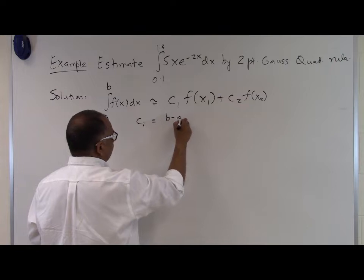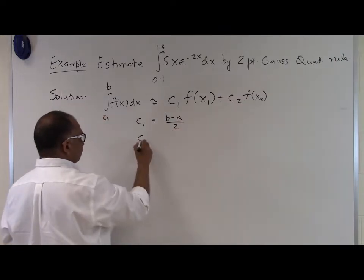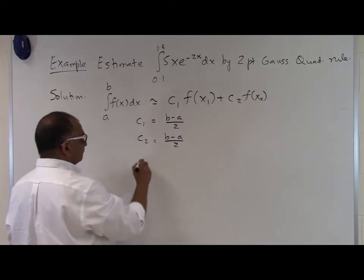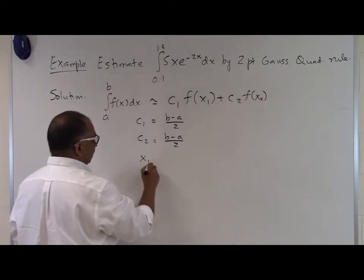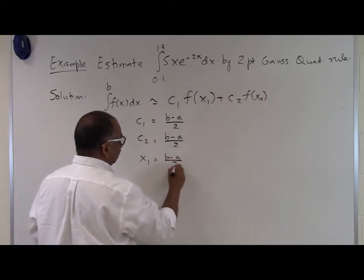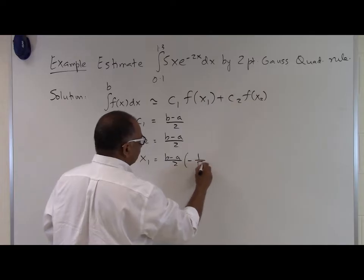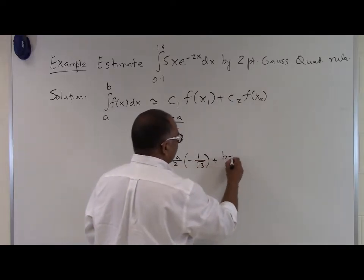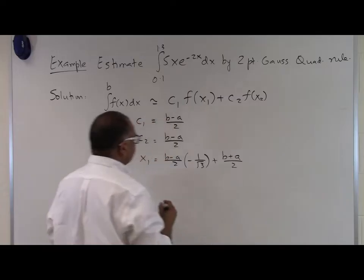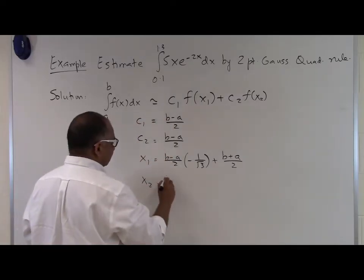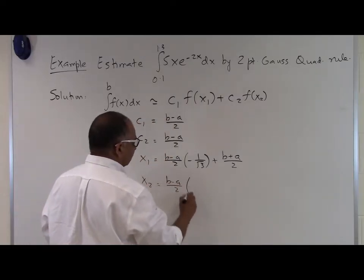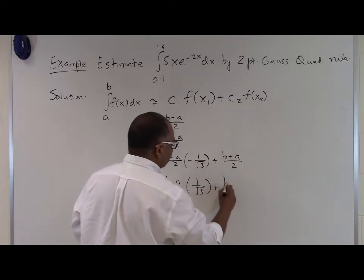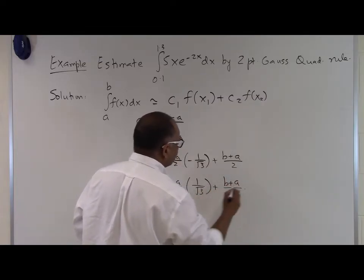For c1, it is (b minus a) divided by two. For c2, it is also (b minus a) divided by two. For x1, it is (b minus a)/2 times (minus one divided by the square root of three) plus (b plus a)/2. And x2 is (b minus a)/2 times (one divided by the square root of three) plus (b plus a)/2.